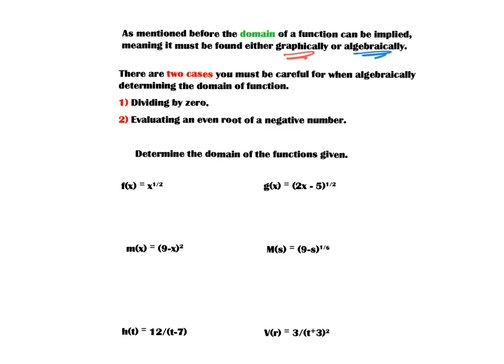For example, if I have f(t) = 10 divided by t squared, there could be a value of t that causes division by zero. In this case, if t equals zero, we would be dividing by zero — that would be a problem. Our calculator doesn't like that, so we use that as our first case.